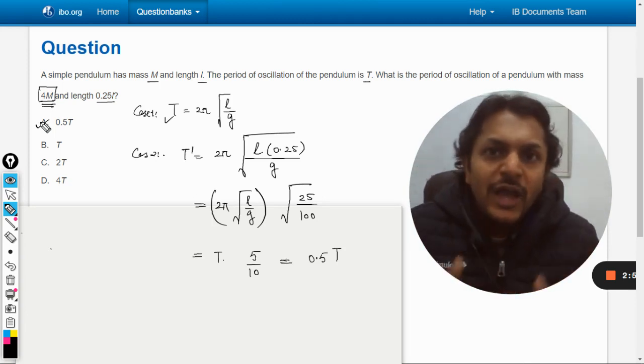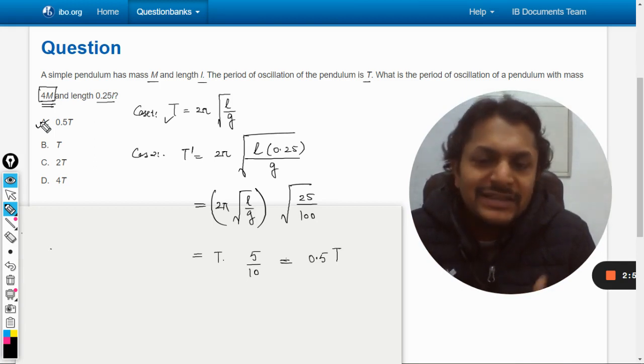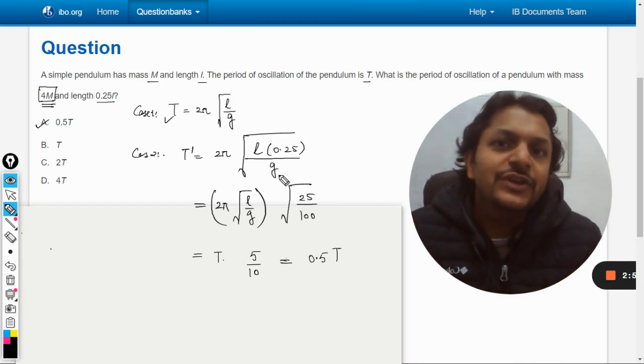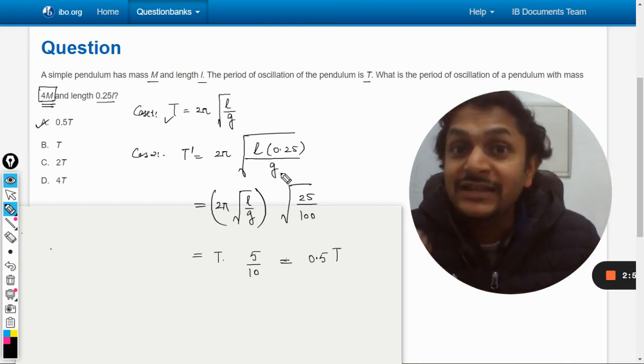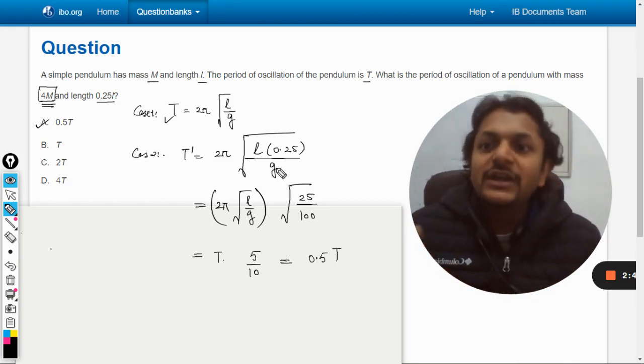is required to have the same acceleration, but our earth is doing that. The gravity, the acceleration due to gravity, is anyways going to remain as 9.8 whether it's a heavier body or whether it's a lighter body.